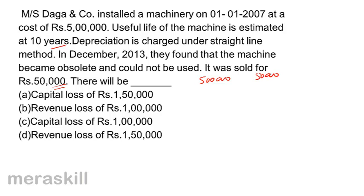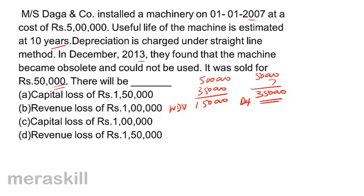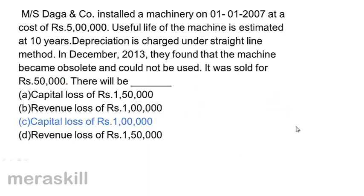From 2007 to 2013 is 7 years, so total depreciation charged is 3,50,000. Book value remaining is 5,00,000 − 3,50,000 = 1,50,000. The machine was sold for 50,000, resulting in a loss of 1,00,000. This is a capital loss of rupees 1,00,000. Correct answer: C.